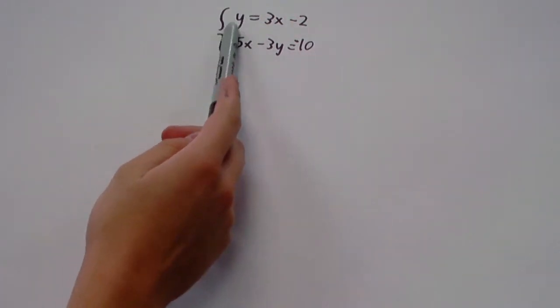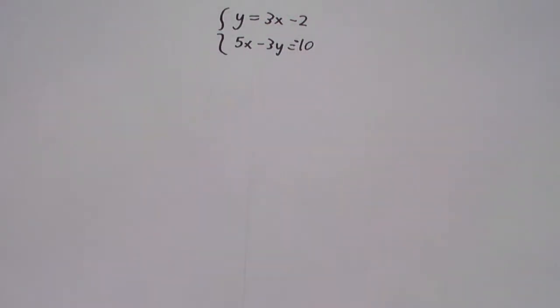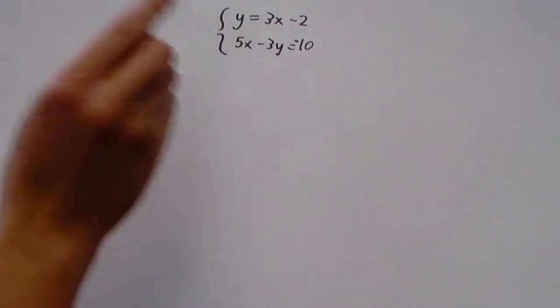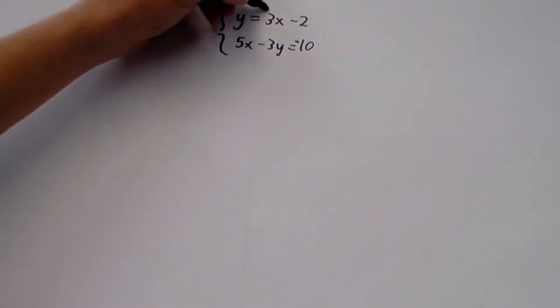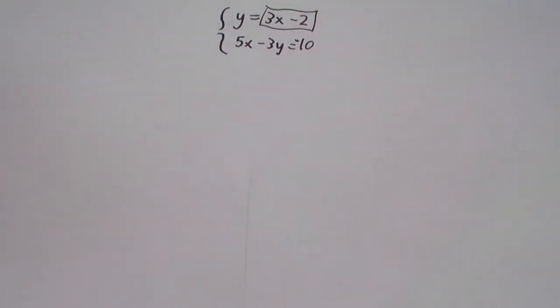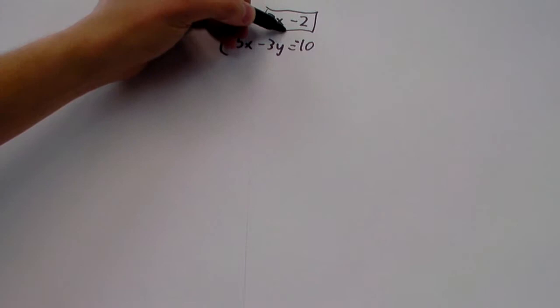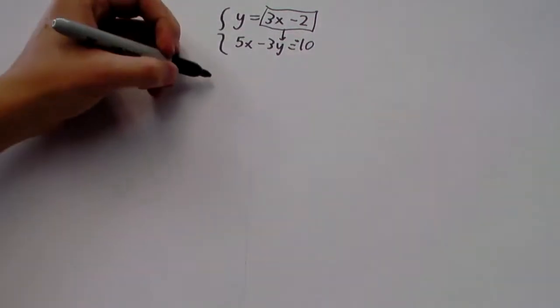This method that we're going to use today is called substitution. In this case, y is already isolated, and that doesn't really tell us much. It just tells us the value of y in terms of x. But it turns out that that's very valuable because we can take this right here.